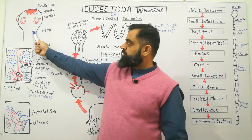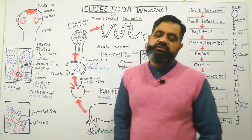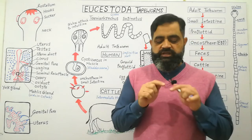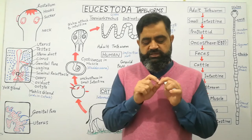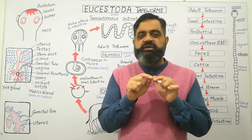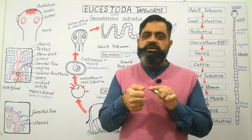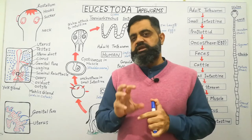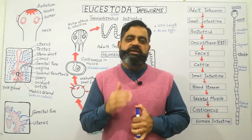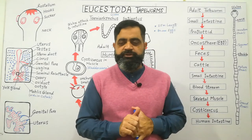Just posterior to the scolex is the neck region, which is the growing region — just like the base of your nail where new growth occurs. Their body grows unlimitedly from the neck region, and proglottids break off from the terminal distal portion of the body.